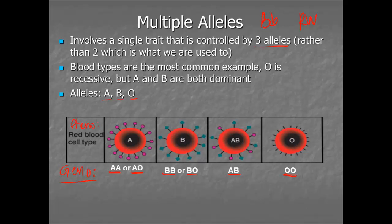We'll come back later in the year to talk more about what these pictures mean. The type of blood that you have means that you have different proteins on the surface of your blood cells, and this has to do with why certain people can get transfusions from one person or another. Your body really doesn't like any foreign invaders. So if someone with type A blood gives blood to someone with type B blood, those proteins are incompatible and it doesn't work. But we'll come back to that later.